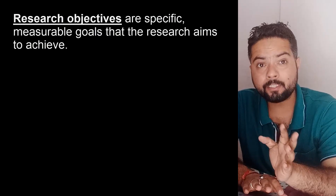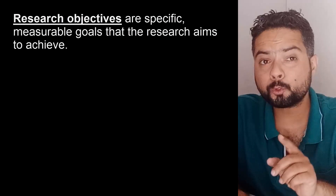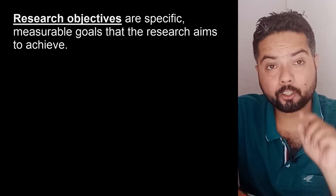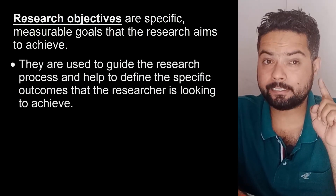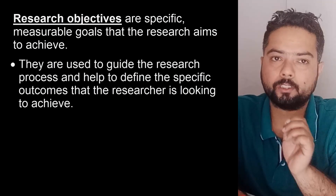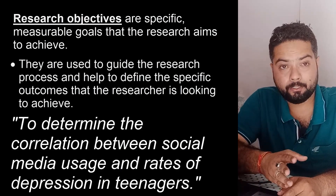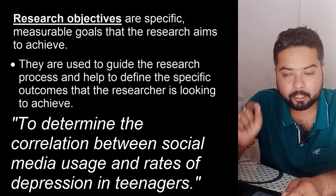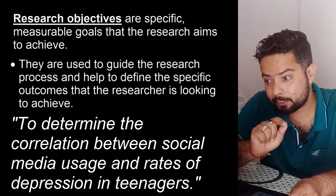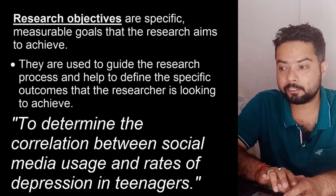First, research objectives. Research objectives are your specific measurable goals that your research aims to achieve. They are used to guide your research process and help to define the specific outcomes that a researcher is looking to achieve. For example, a research objective can be to determine the correlation between social media usage and rate of depression in teenagers. This can be your possible research objective.